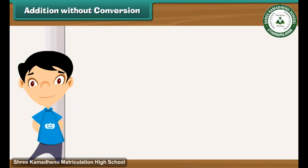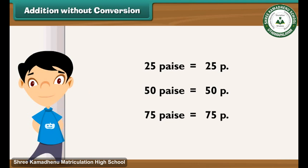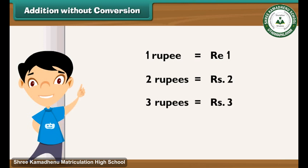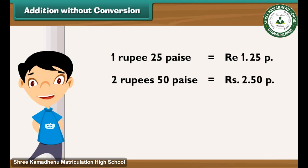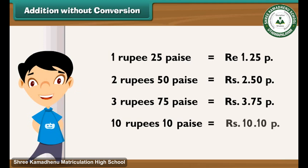Addition without conversion: We can write 25 paise as 25p, 50 paise as 50p, and 75 paise as 75p. We can write 1 rupee as ₹1, 2 rupees as ₹2, 3 rupees as ₹3, 4 rupees as ₹4, and so on. So, 1 rupee 25 paise is written as ₹1.25p, 2 rupees 50 paise as ₹2.50p, 3 rupees 75 paise as ₹3.75p, and 10 rupees 10 paise as ₹10.10p.